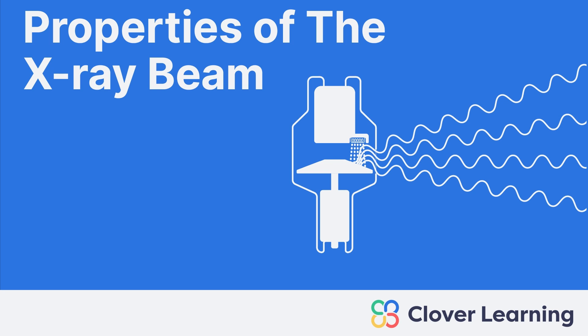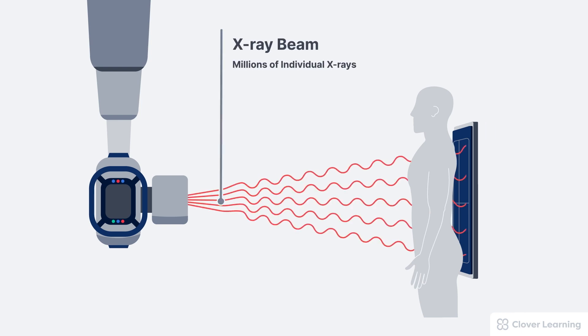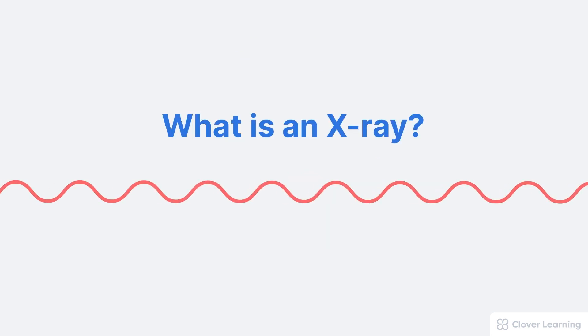Welcome. This lesson is the first in a series about the x-ray beam. Radiographic images are created by exposing the patient to an x-ray beam. The x-ray beam is actually composed of millions of individual x-rays. So what is an x-ray?